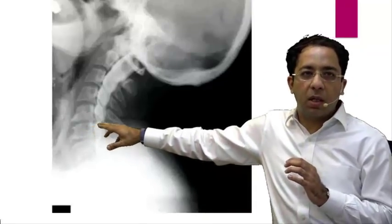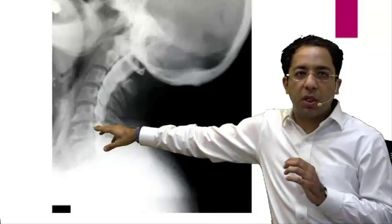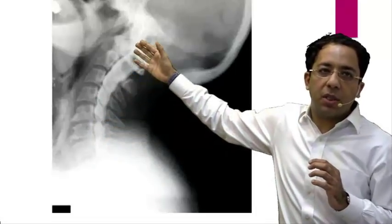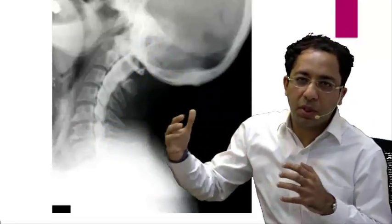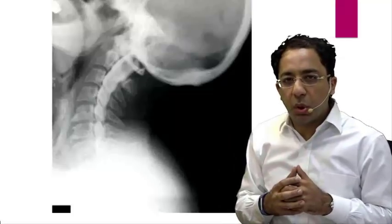Then you will see the dye sac and you can actually see maybe a disc bulge causing impression on the thecal sac. You can see if there is extradural compression or an intradural block, and your spinal cord will be seen as a filling defect. This is myelography. Myelo means cord, graphy. It was very commonly done before the advent of MRI.